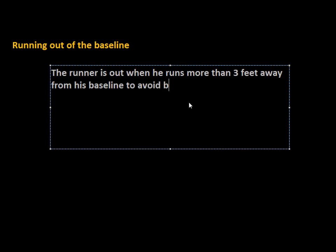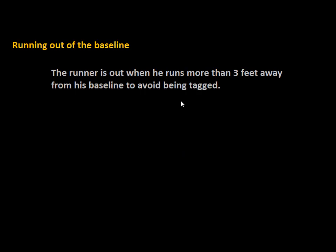If the runner crosses paths with a fielder who's attempting to make a play on another runner or at another base, he's allowed to run out of the baseline. But this rule really comes into play whenever the fielder is attempting to make a play on him, and they're kind of standing right side by side. The key word in this rule is 'his baseline.'